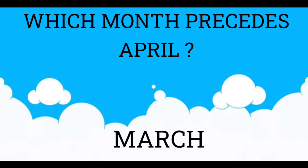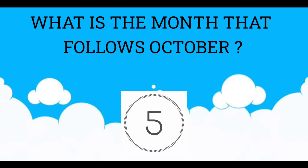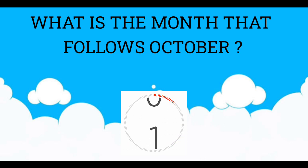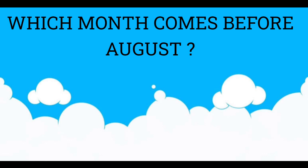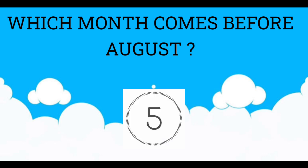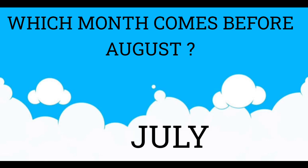March. What is the month that follows October? November. Which month comes before August? July.